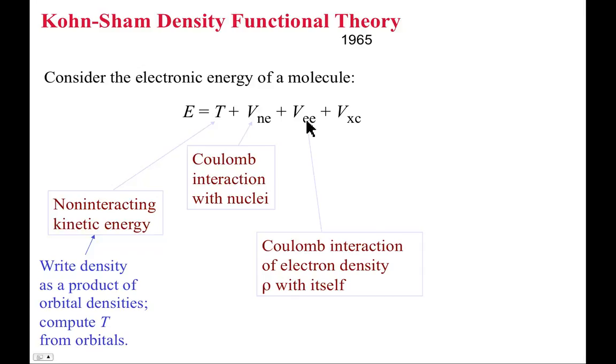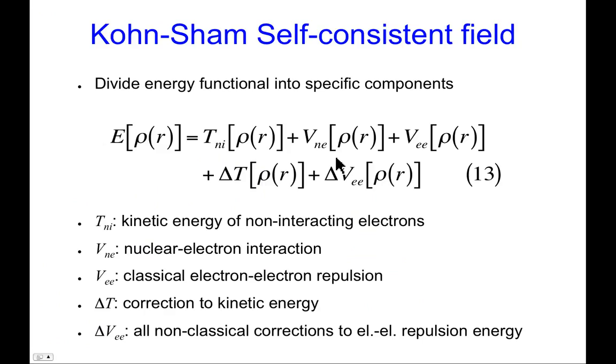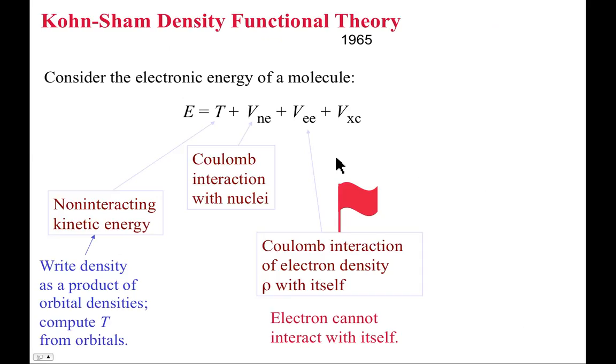There's also a Coulomb interaction with the nuclei, and that's pretty easy to deal with. For the electron-electron interaction, I will take the Coulomb interaction of the density with itself. That's that classical interaction. And, of course, that brings in a red flag because an electron doesn't interact with itself. Moreover, we're ignoring some of the exchange and correlation in a many-electron system. But that's what this last term will be for.